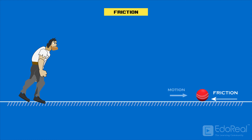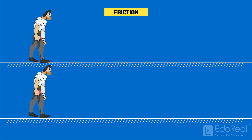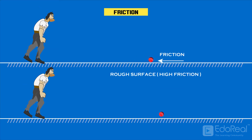This friction acts opposite to the motion of objects. We can say it is a kind of force. All objects in our real life come to a halt. Some come sooner because of high friction. Some take more time to come to a halt because of less friction.